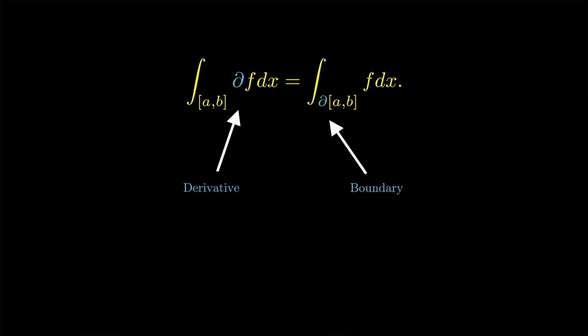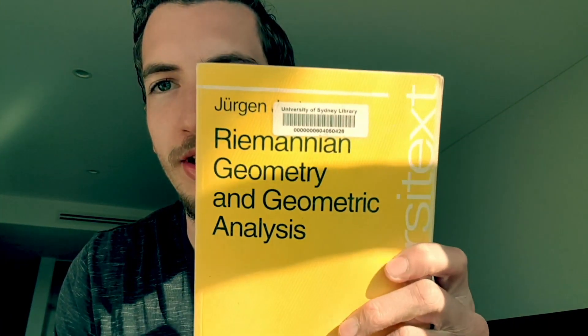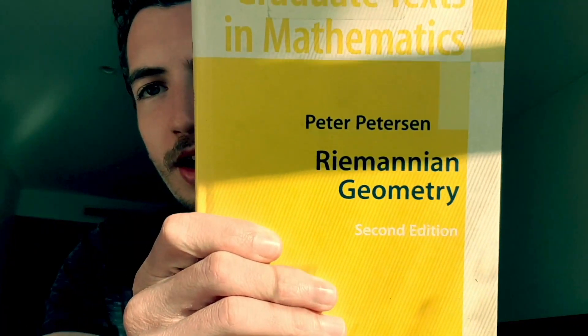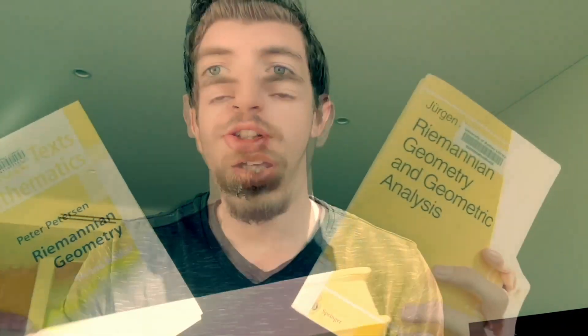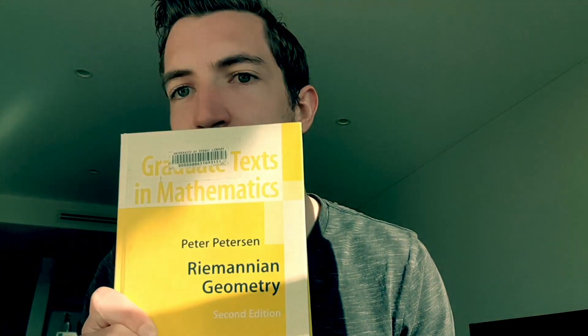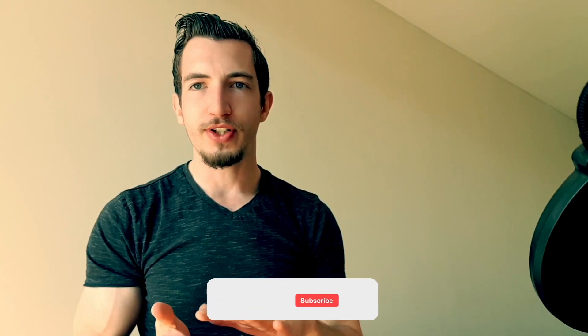The way this discussion is formalized is through what's referred to as de Rham cohomology, a subject within differential geometry covered in any standard text on Riemannian geometry, albeit typically at the graduate level. This can be found, for example, in Jost's Riemannian Geometry and Geometric Analysis, or my favorite book on the subject, Peter Petersen's Riemannian Geometry, second edition — both of which I would highly recommend.